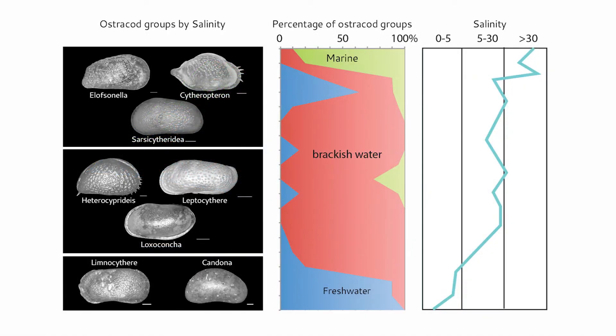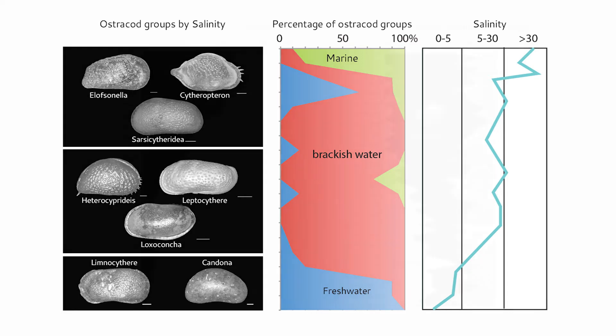Ostracods and some groups of foraminifera are sensitive to the salinity of the water, and thus micropaleontologists can use those fossils to reconstruct changes in freshwater inflow to bays and estuaries, or distinguish a marine versus freshwater environment. Species that are sensitive to differences in food or oxygen availability can also inform micropaleontologists about changes in the past.